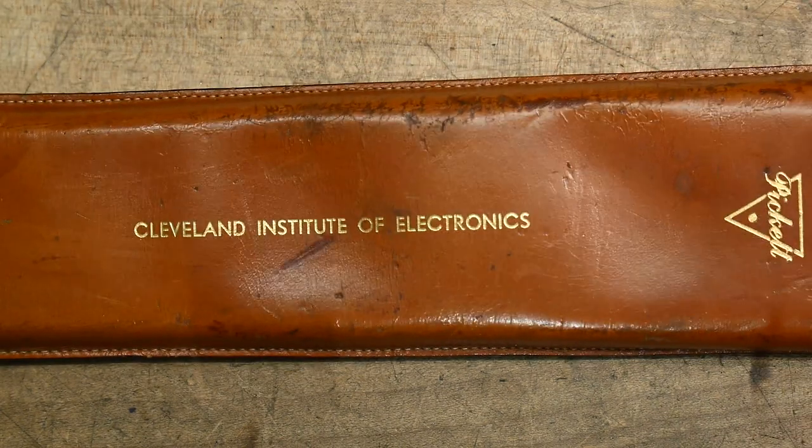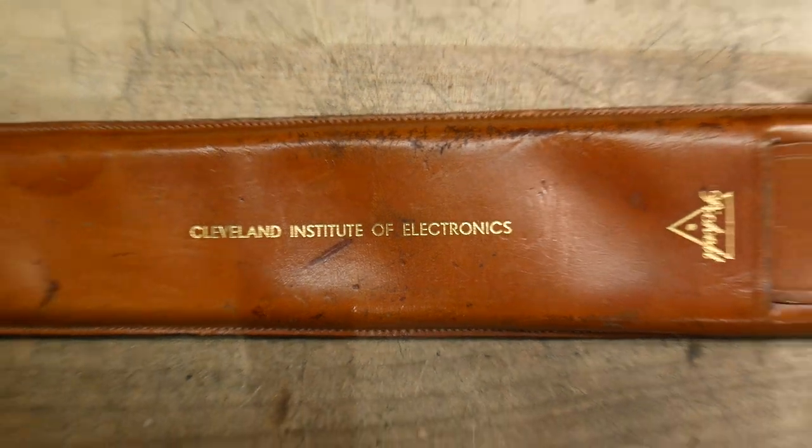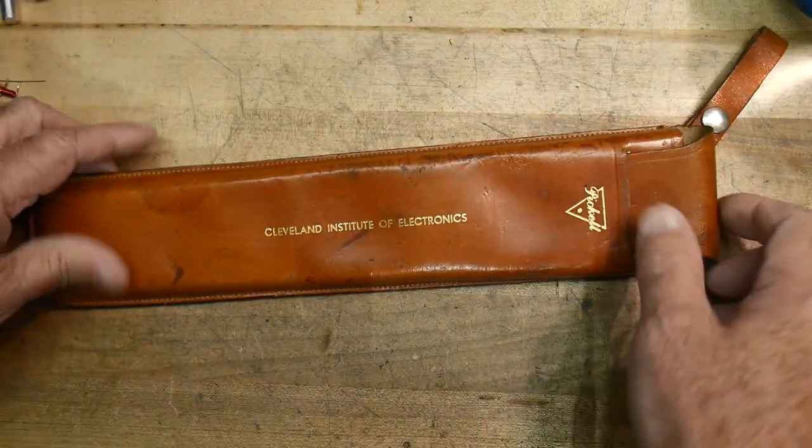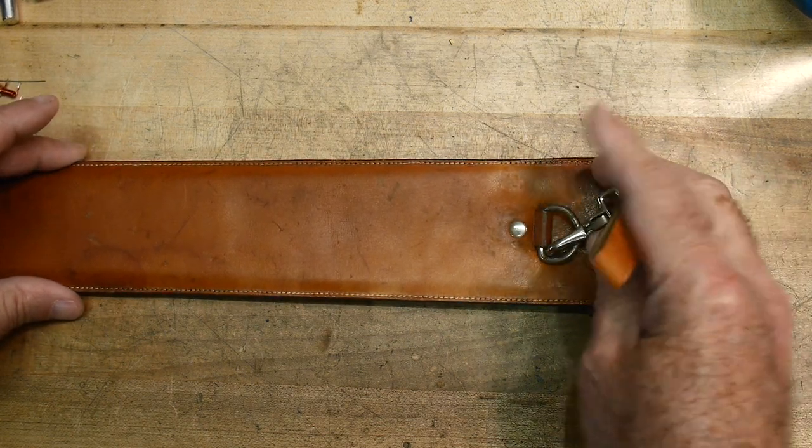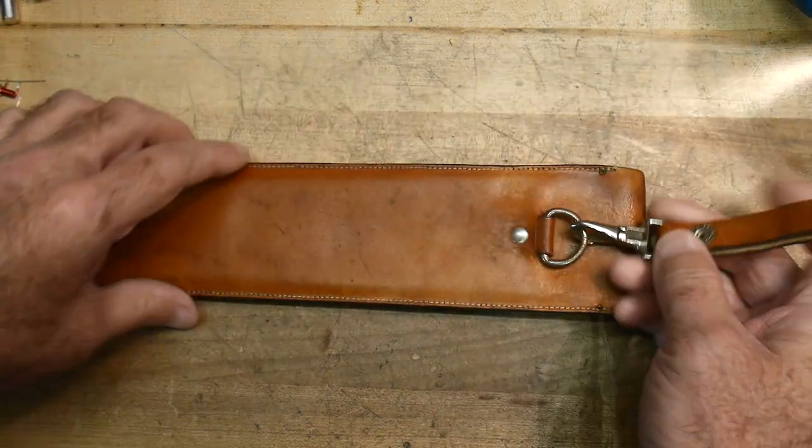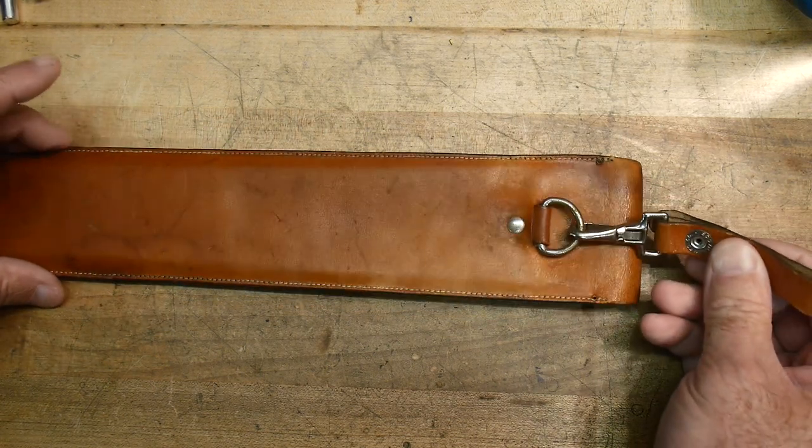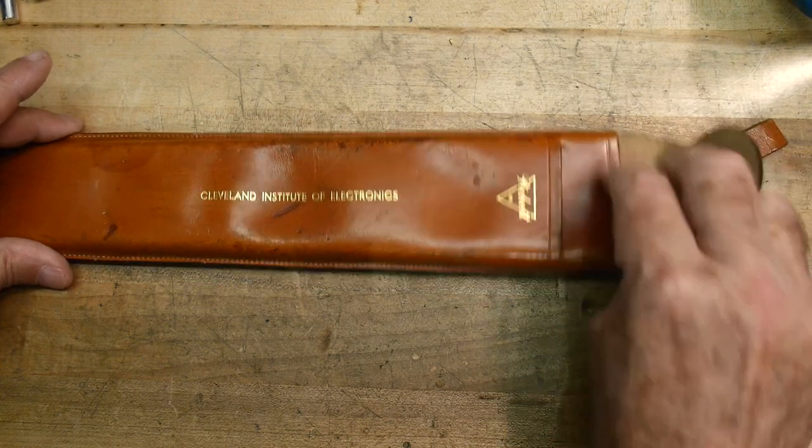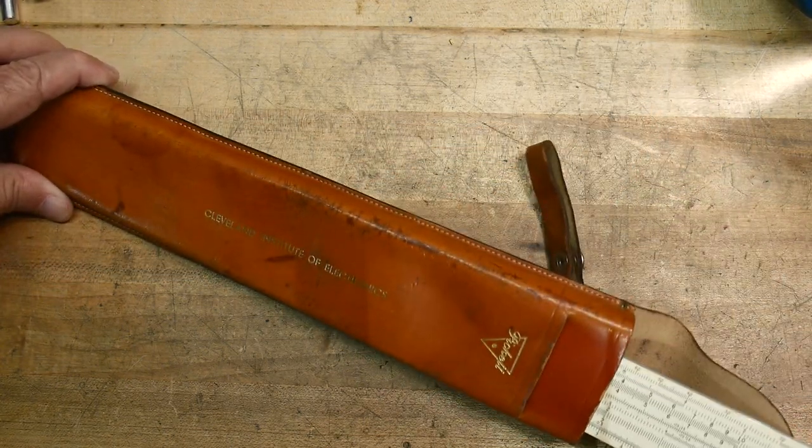But this is a slide rule. Let me zoom out a bit here so we can see the whole thing. And of course it's got the belt loop. Of course you wore your slide rule on your belt. So this went on the belt, and then there's a little clip here. You can take it off. And you could wear it like a holster, and out comes your slide rule.